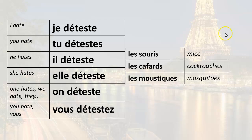So if I want to say I hate mice in French, I would say je déteste les souris. I hate cockroaches — je déteste les cafards. I hate mosquitoes — je déteste les moustiques.